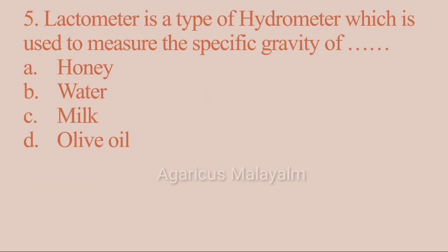Fifth question: a lactometer is a type of hydrometer which is used to measure the specific gravity of what? Option A: honey. Option B: water. Option C: milk. Option D: olive oil. Correct answer: Option C — milk.